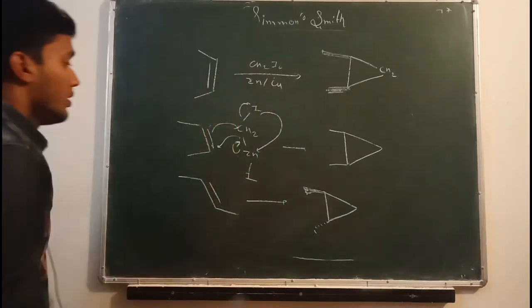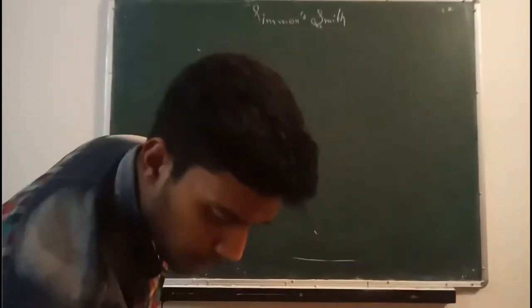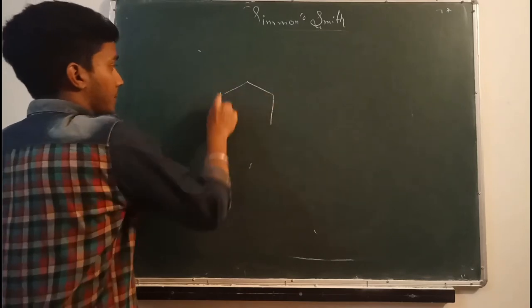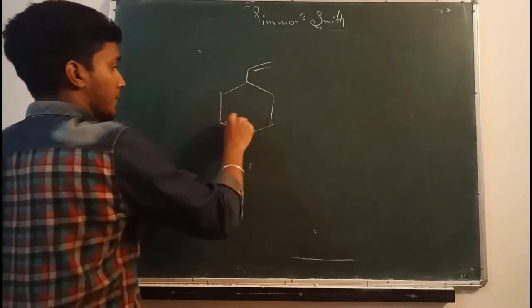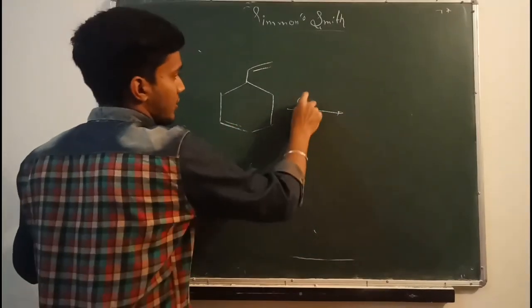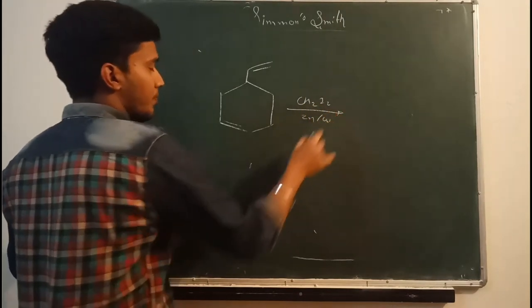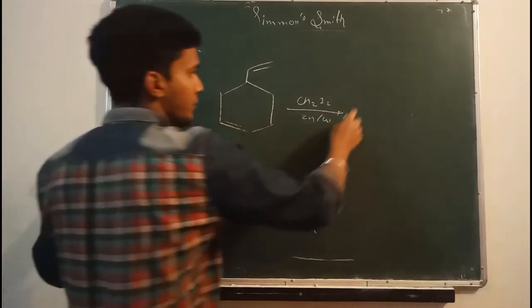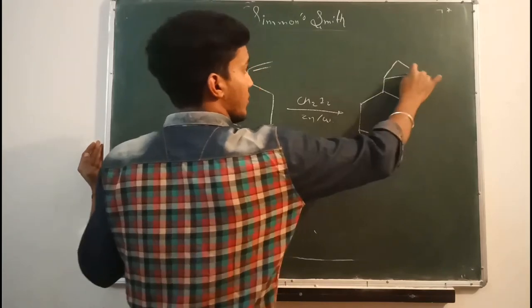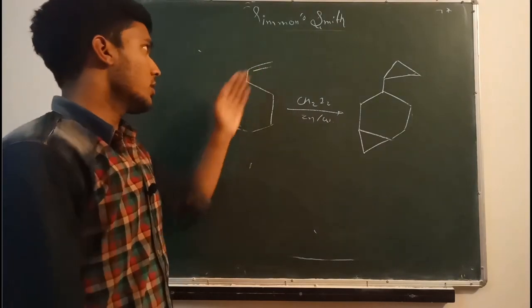Let me have another example. It will clear you more and more. If we have an example like this, where will it form the cyclopropane? CH2I2, there will be zinc and copper. So there are two possibilities if you will see, this can form and this can also form. But which one is suitable or which one will give more yield? This or this?